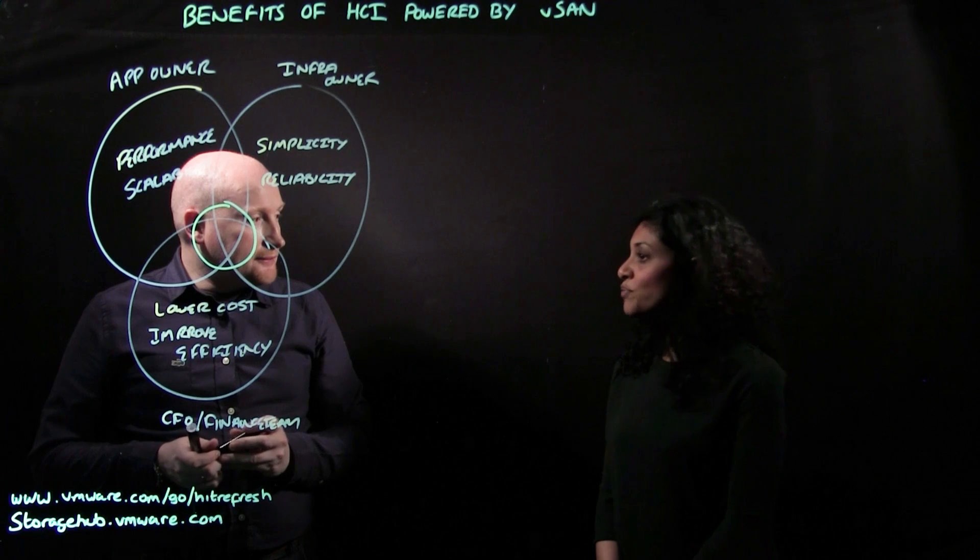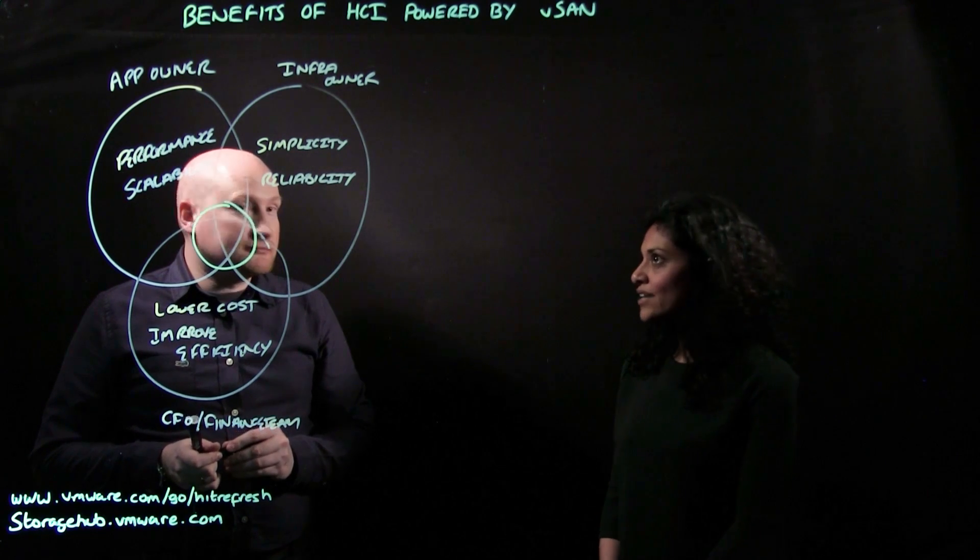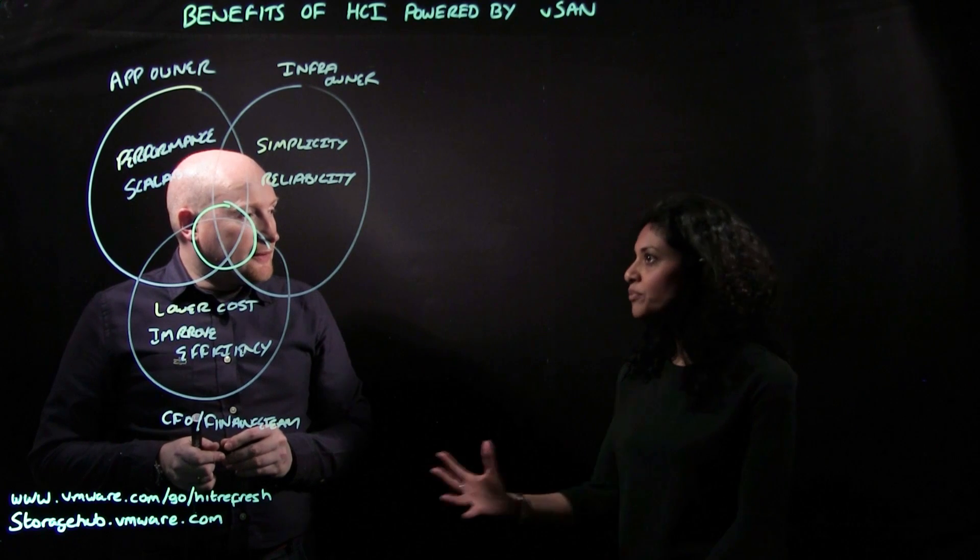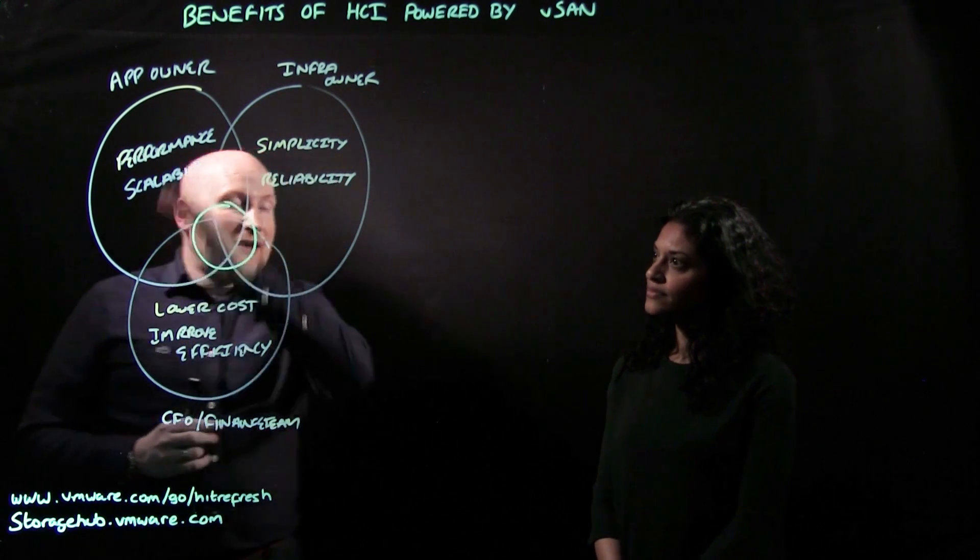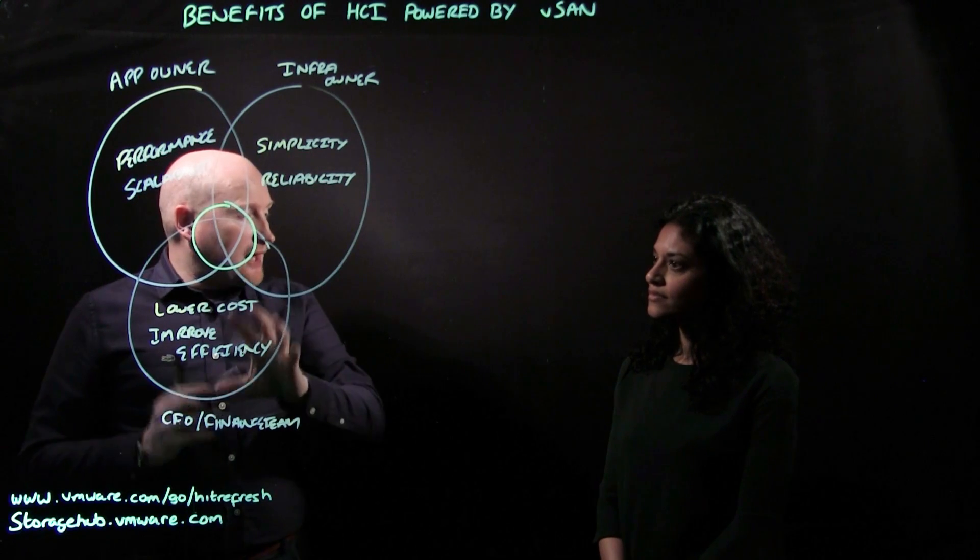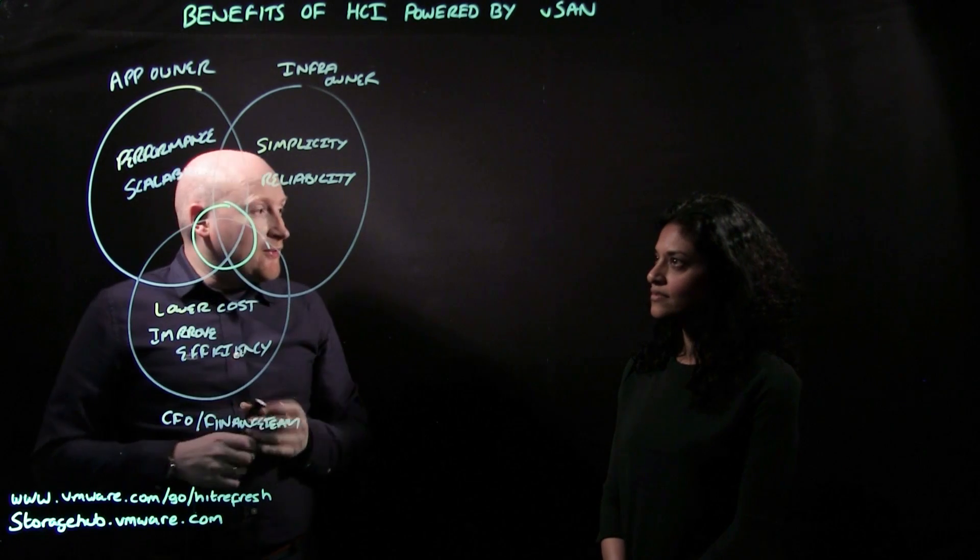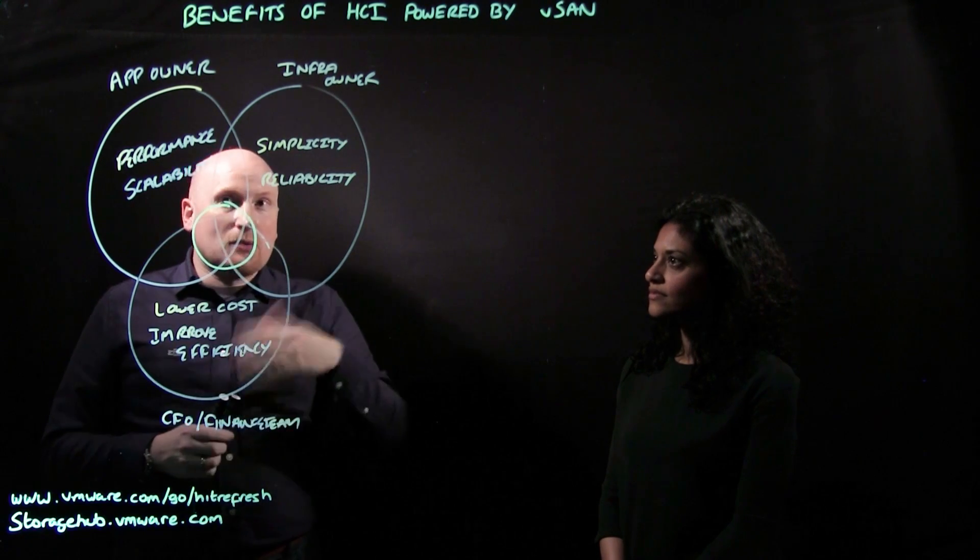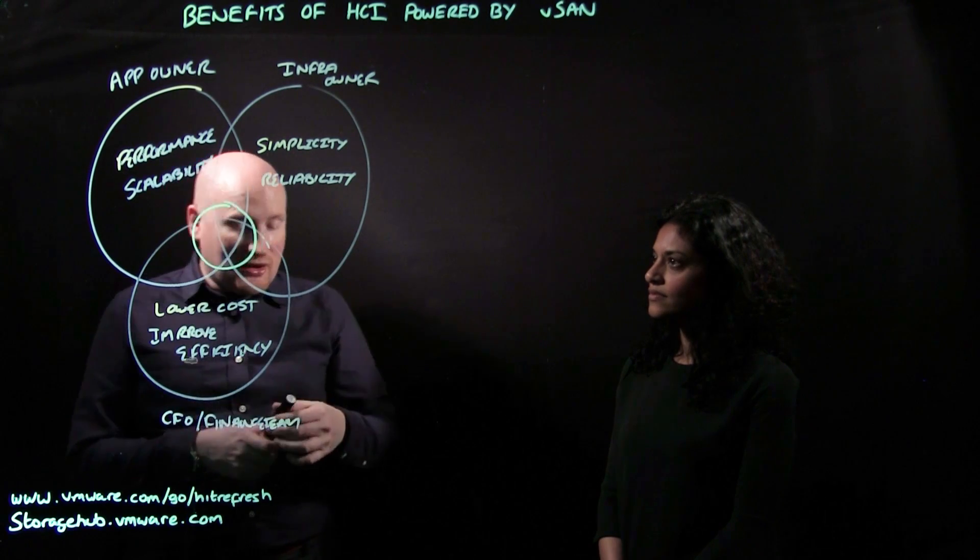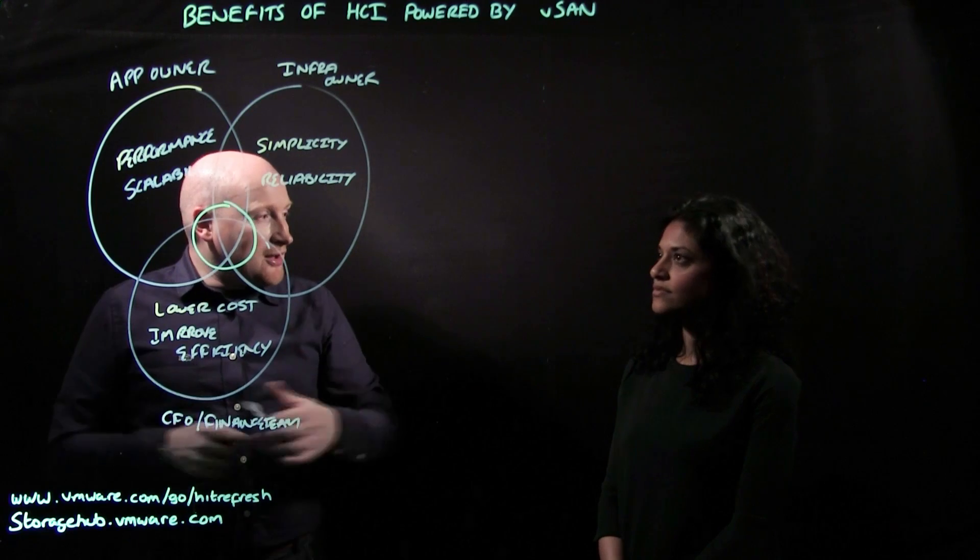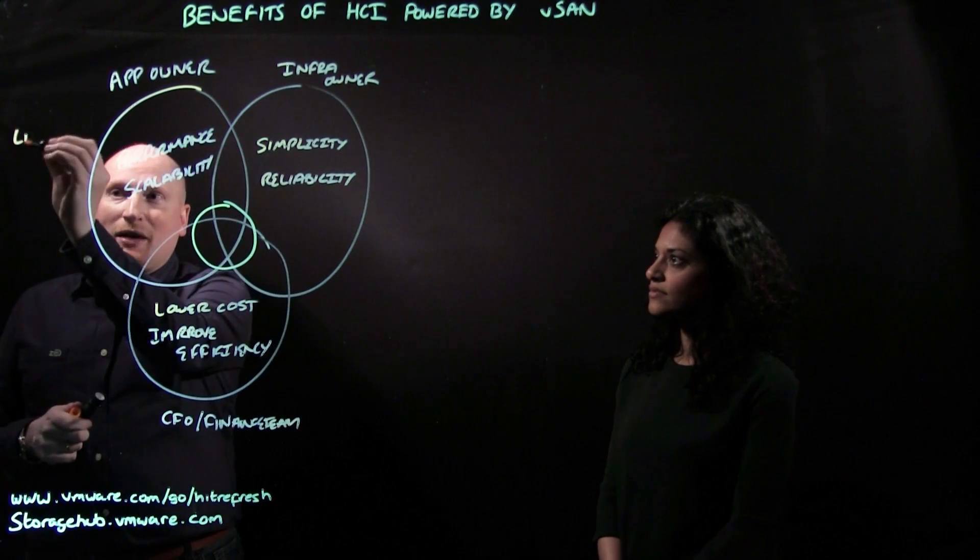So it's obvious, Simon, no parts of the business want to make any sacrifice. How can HCI powered by vSAN help businesses with that? That's a good question. So firstly, let's go back to these three individual key stakeholders. The application owner is looking for performance and scalability. One of the things that HCI powered by vSAN brings is scale of linear performance. As you increase the environment, the performance scales with that environment. So that's the first one, linear performance.